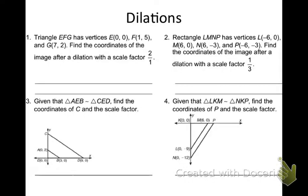Let's try number 1 here. Triangle EFG has vertices E(0, 0), F(1, 5), and G(7, 2). Find the coordinates of the image after a dilation with a scale factor of 2/1. So I need to take all of my coordinates and multiply them by 2/1. So E, the image of E, would be located at 0 times 2 and 0 times 2 gets me (0, 0). That one doesn't change. F, where would F be located at? I take 1, 2, 10. Nice job. Again, taking 2 times 1 and 2 times 5. And then how about G? Where would G be located at? 14 and 4. Nice job.